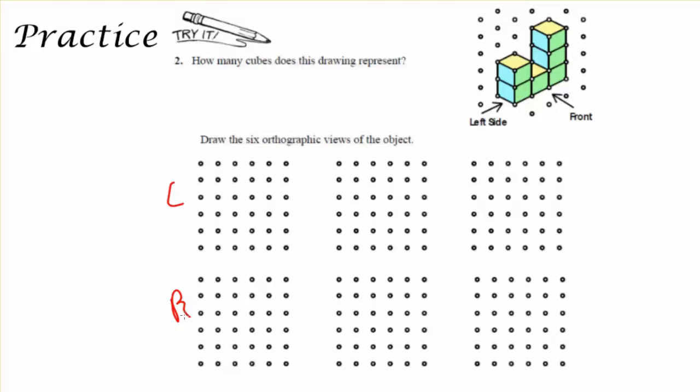So let's go ahead and draw what the view from the left is going to look like. Well since I have three cubes stacked up, I would really only see three squares from either the left or the right side.